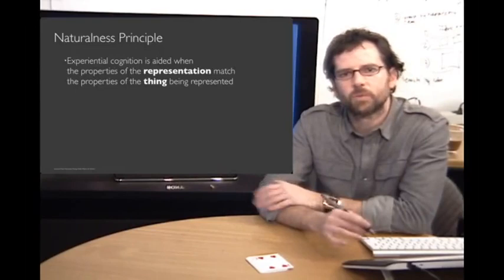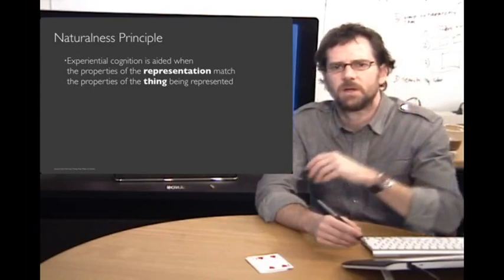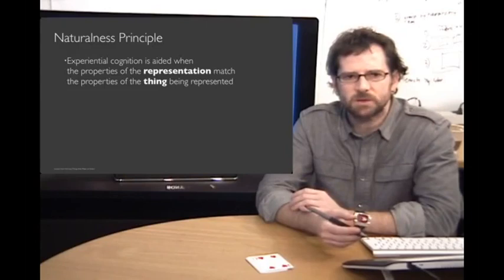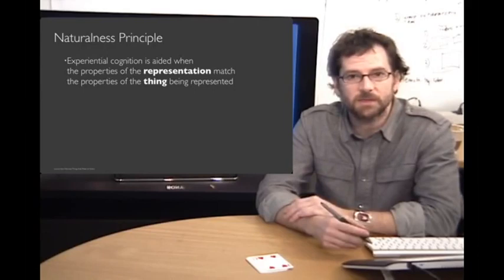One of the words that people toss around all the time in terms of effective user interfaces is that this user interface is natural. And when we say that, we mean a couple of different things. But one of the things that we mean, we can see in our example of the oranges and the bagels, that the bagels as a task is more natural because the properties of the representation bagels can stack matches the properties of the thing that's being represented.